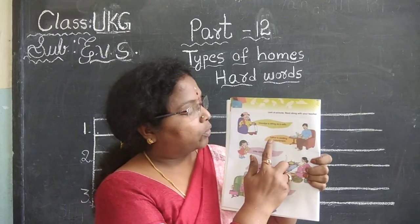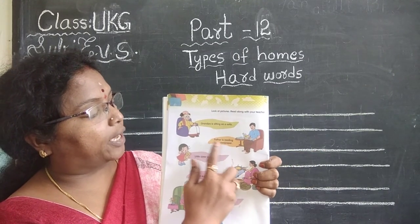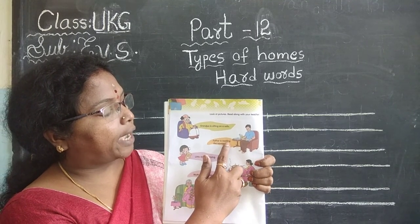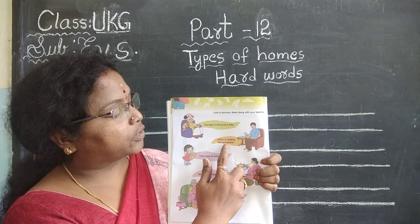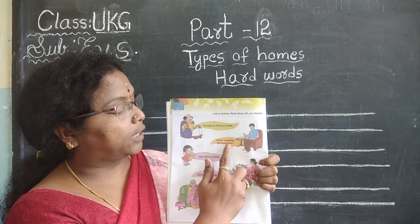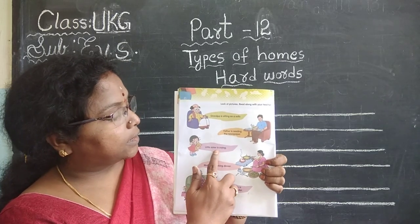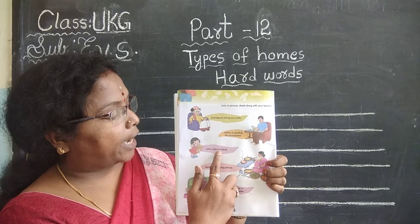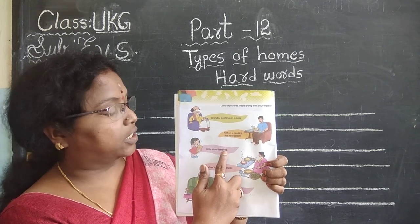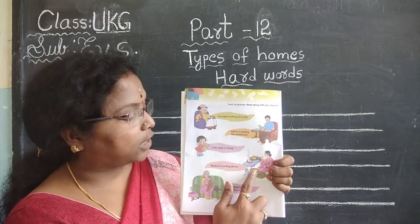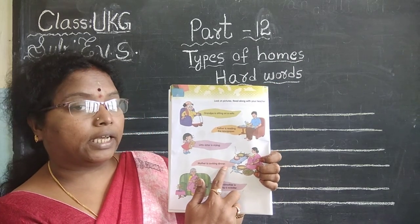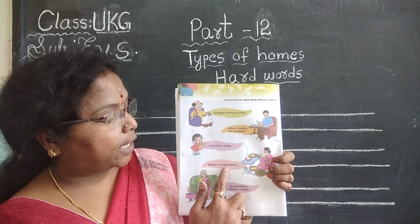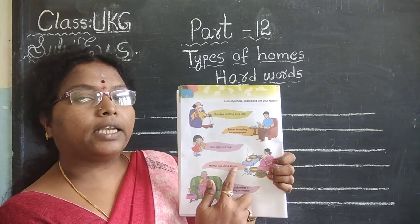Spell it. Now, father is reading the newspaper. F-A-T-H-E-R, father. I-S, is. R-E-A-D-I-N-G, reading. T-H-E. N-E-W-S, news. P-A-P-E-R, paper. Father is reading the newspaper. Little sister is crying. L-I-T-T-L-E, little. S-I-S-T-E-R, sister. I-S, is. C-R-Y-I-N-G, crying. Little sister is crying. What is mother doing here? Mother is cooking dinner. M-O-T-H-E-R, mother. I-S, is. C-O-O-K-I-N-G, cooking. D-I-N-N-E-R, dinner.